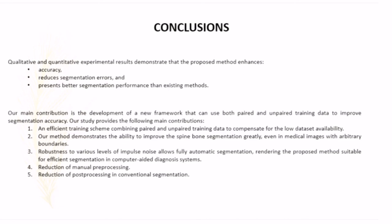Based on the qualitative and quantitative experimental results, it demonstrates that the proposed method enhances accuracy, reduces segmentation errors, and presents better segmentation performance compared to existing methods. Our main contribution is the development of a new framework that can use both paired and unpaired training data to improve segmentation accuracy. Our study provides the following main contributions: an efficient training scheme combining paired and unpaired training data to compensate for low dataset availability; our method demonstrated the ability to improve spine bone segmentation greatly, even in medical images with arbitrary boundaries; it's robust to various levels of impulse noise; reduction of manual preprocessing; and reduction of processing in conventional segmentation. This is the end of my presentation. If you have any questions, feel free to contact me, send me an email, or anything. Thank you.